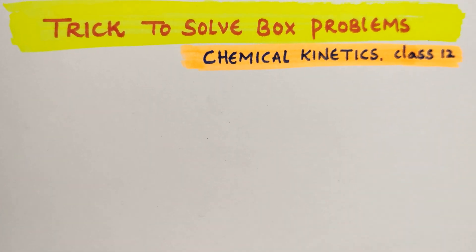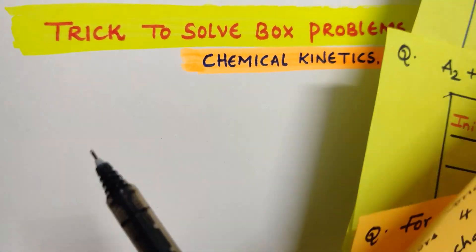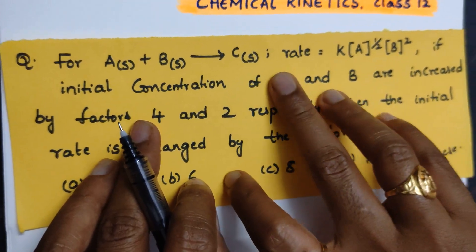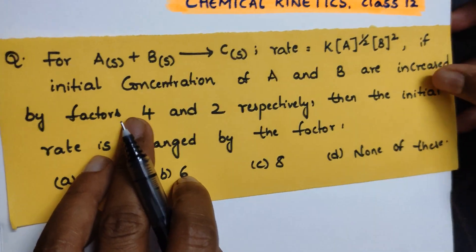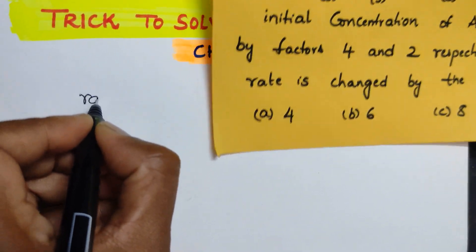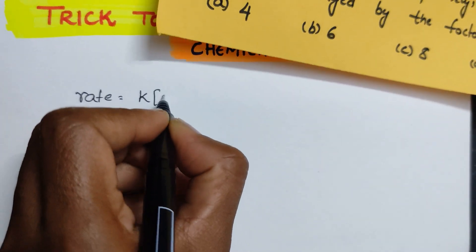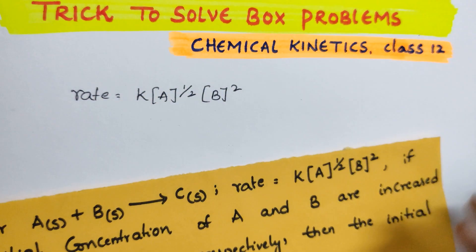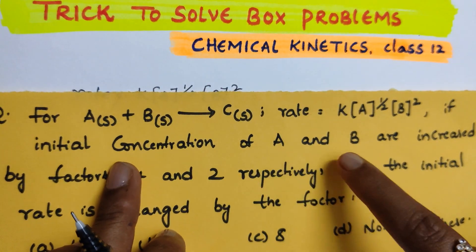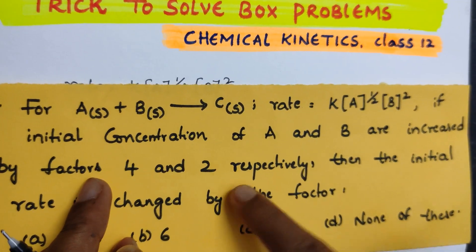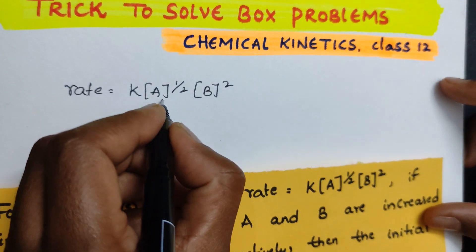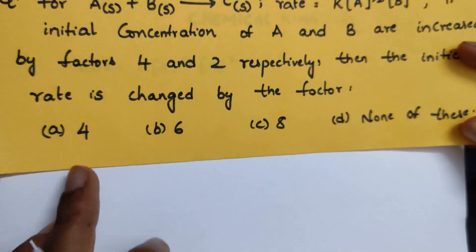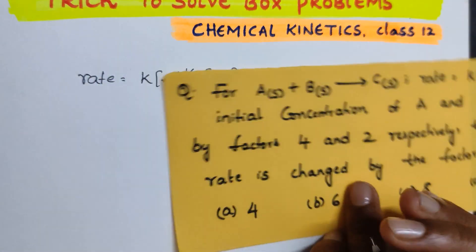First I will teach you this question: for A solid plus B solid gives rise to C solid, the rate is given as rate = k[A]^(1/2)[B]^2. The initial concentration of A is increased by 4 times and B is increased by 2 times. We have to find how much the initial rate has changed.